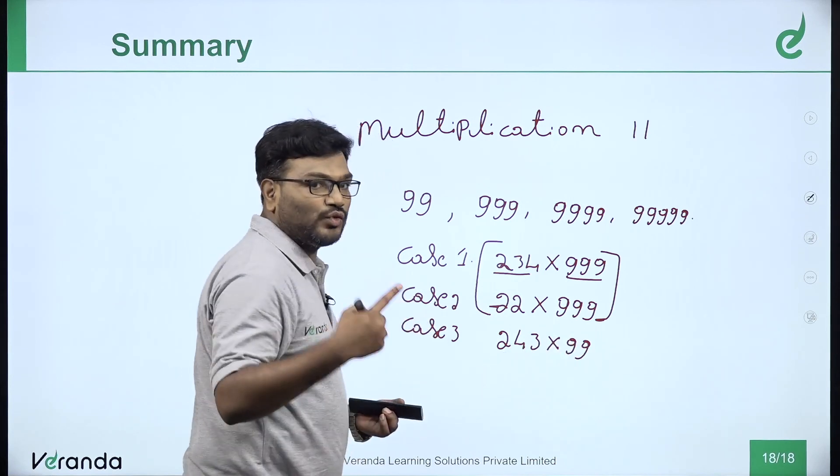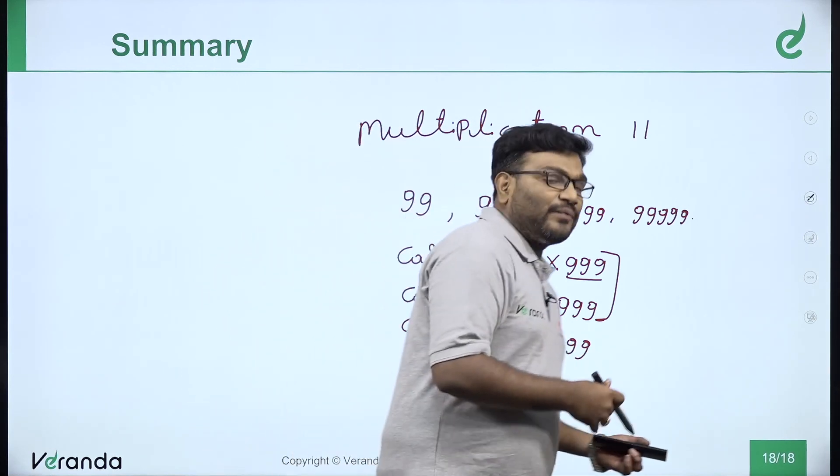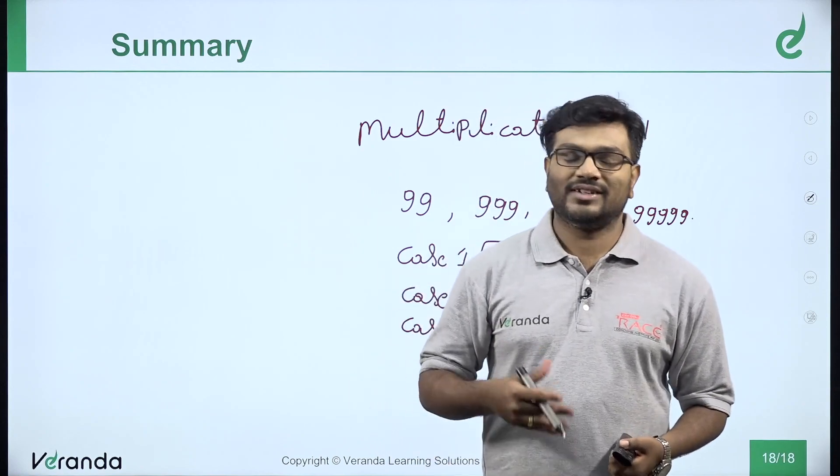243 into 99: use 100 minus 1. We are finishing Unit 2. Thank you.